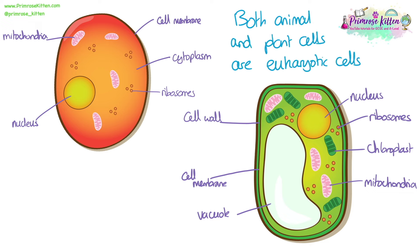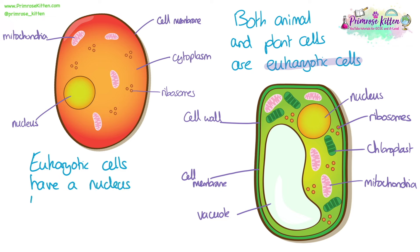Both animal and plant cells are classed as eukaryotic cells. The word eukaryotic describes any cell that has a nucleus, and inside the nucleus is where the DNA is kept. Because both plant and animal cells have a nucleus, they are both eukaryotic cells.